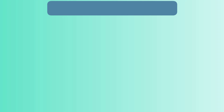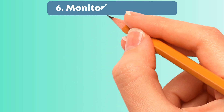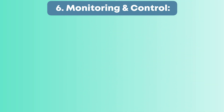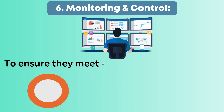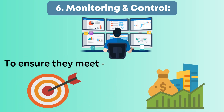Stage 6: Monitoring and Control — continuously monitoring the implemented changes to ensure they meet the intended goals and provide ongoing value.